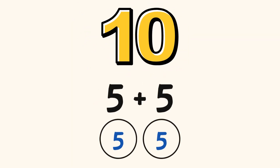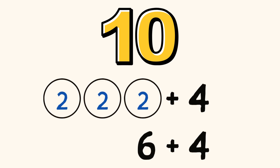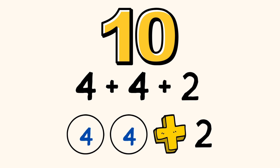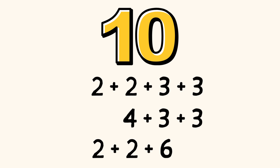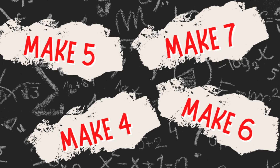Wonderful job! We learned many ways to make the number ten today. We saw that five plus five, or two groups of five, equals ten. We also saw that three groups of two, or six plus four, equals ten. We learned that four plus four, or the double of four, also known as two groups of four, plus two equals ten. Finally, we saw that the double of two plus the double of three, or four plus the double of three, or the double of two plus six, all equal ten. Job well done — go on and try another set!